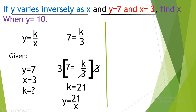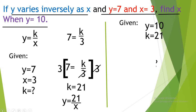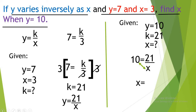Now using K equal to 21 and Y equal to 10, we substitute into Y is equal to K over X: 10 is equal to 21 over X. We interchange X and 10, so X is equal to 21 over 10. This cannot be simplified further, so the final answer is X is equal to 21 over 10.